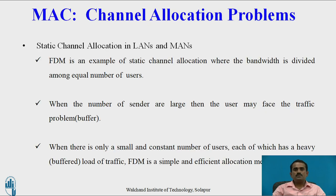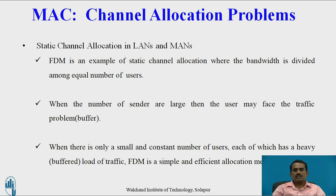Next is the channel allocation problem. The user needs to know how to allocate different channels before transmitting data from one station to another. There are two types: static and dynamic channel allocation. In static channel allocation, this concept was previously used in telephone trunks. If there are N number of users, the bandwidth is equally divided and distributed to N stations. Each user can transfer data using that divided bandwidth. A good example of this is FDM — Frequency Division Multiplexing — which allocates bandwidth equally among different users.